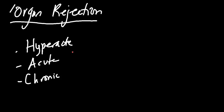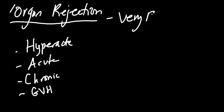If I just received a kidney from somebody, I could have hyper acute, acute, or chronic kidney rejection. There's also a thing called graft versus host disease, which we'll cover the very basics of. My goal is to cover the basics and the higher-yield buzzwords you should know. Let's begin with hyper acute.